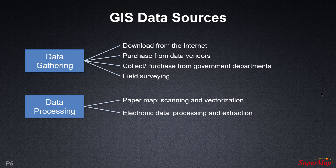There are generally two parts to a data acquisition procedure. First the data is gathered and then it is processed to make it more useful than in its raw form. We can download some commonly used data from the internet, but it might be incomplete and some high precision data might be expensive. For data processing, paper maps would be scanned and vectorized, and electronic maps would have a special process applied to extract the required data.